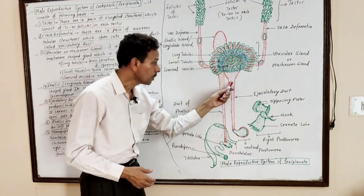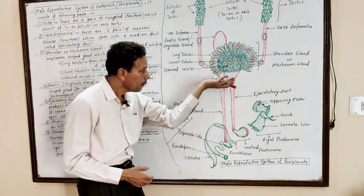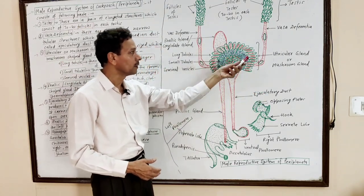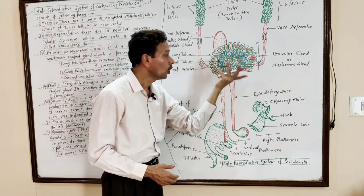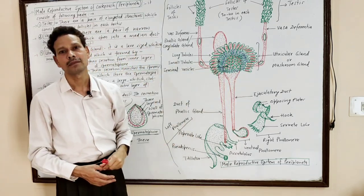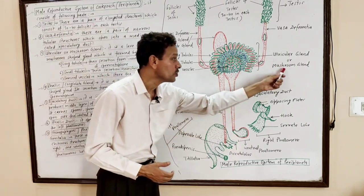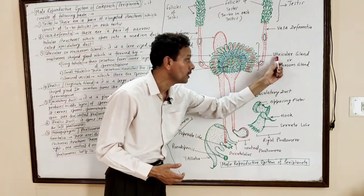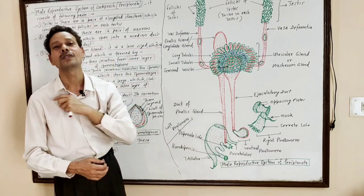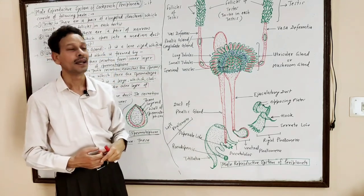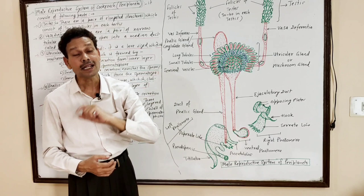The vasa deferentia unite at the junction of the ejaculatory duct. At the upper part of this ejaculatory duct is a globular mushroom-shaped gland, which is very important. This mushroom gland is also called the utricular gland or uricose gland, as it is also involved in excretion.